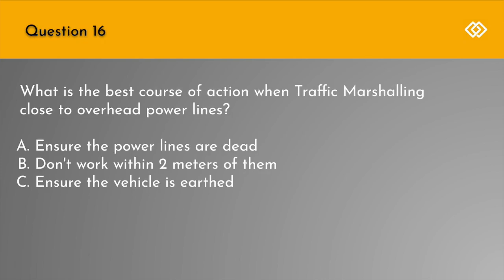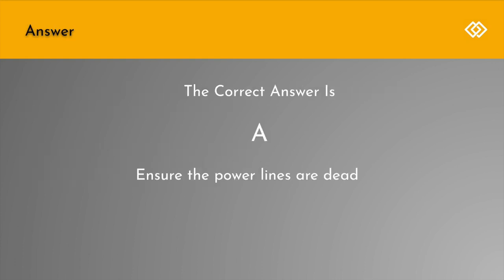Question 16. What is the best course of action when traffic marshalling close to overhead power lines? A. Ensure the power lines are dead. B. Don't work within 2 metres of them. Or C. Ensure the vehicle is earthed. The correct answer is A: Ensure the power lines are dead.